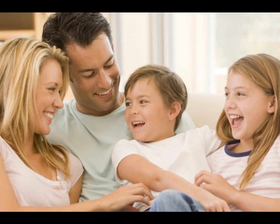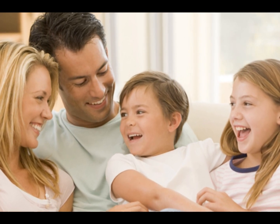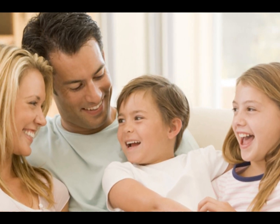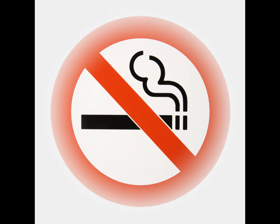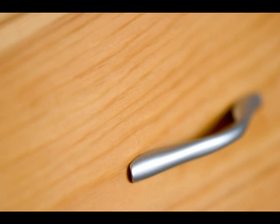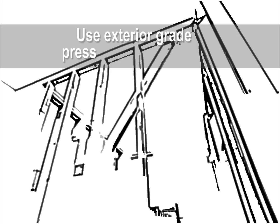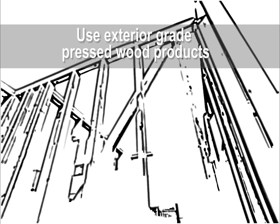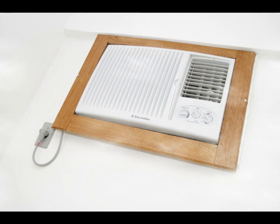Fortunately, there are steps people can take to reduce exposure in their homes. Do not smoke indoors. Limit the introduction of formaldehyde-containing products and building materials. Use exterior grade pressed wood products, which are lower emitting because they contain phenol resins, not urea resins.